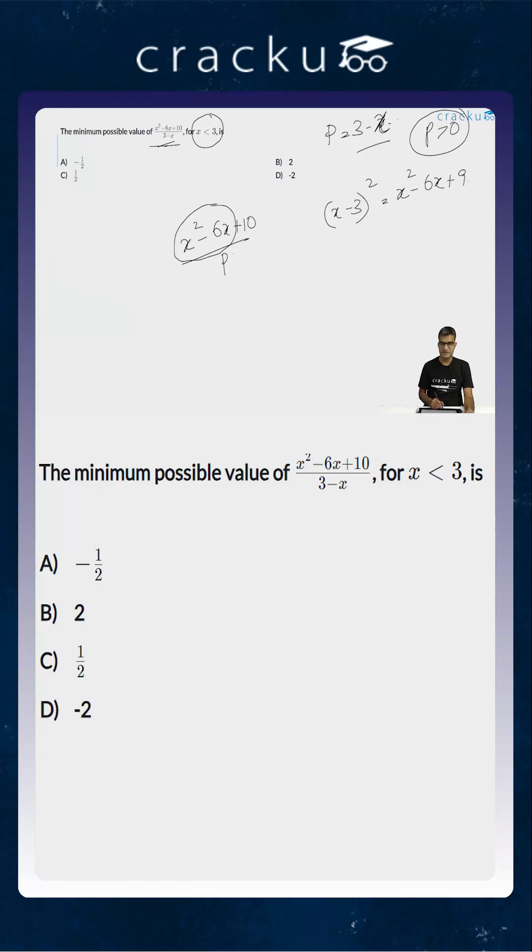So this expression basically is (x - 3)² + 1 divided by (3 - x), which equals p. But if 3 - x equals p, then (x - 3)² equals p². So this is equal to (p² + 1) divided by p, which equals p + 1/p.